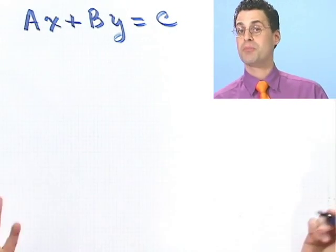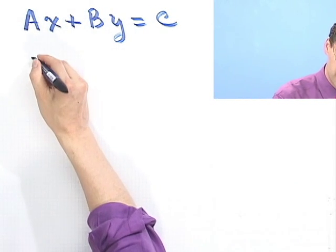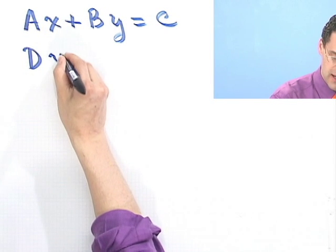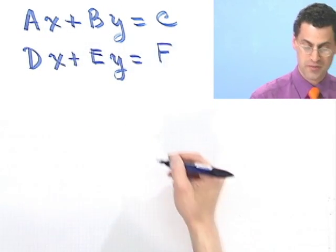I don't know what they are, but then I have another equation. See, I have a system of them. So I'd have maybe dx plus ey equals f. So I have some different equation.